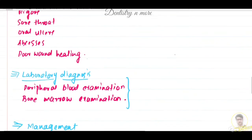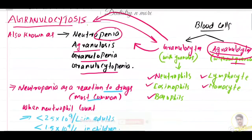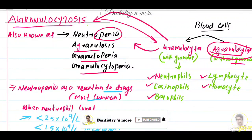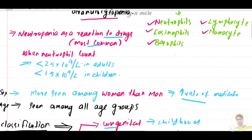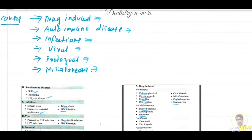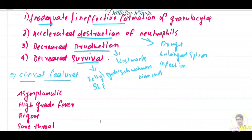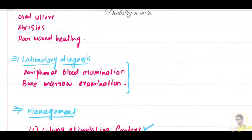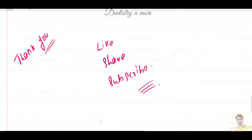So that was about agranulocytosis. We learned about its introduction, why it is called neutropenia, the various names, the difference between granulocytes and agranulocytes, gender and age predilection, classification, causes, pathogenesis, clinical features, lab diagnosis, and finally the management. That's all for today — I will come up with a new topic. Thank you.